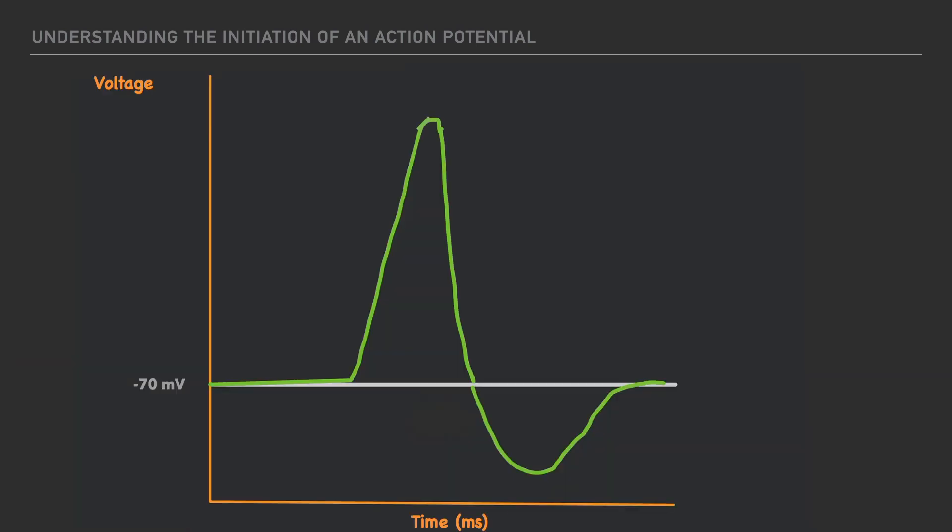Now in order to generate an action potential, a neuron must receive a stimulus. And that stimulus has to be strong enough to actually elicit the action potential.